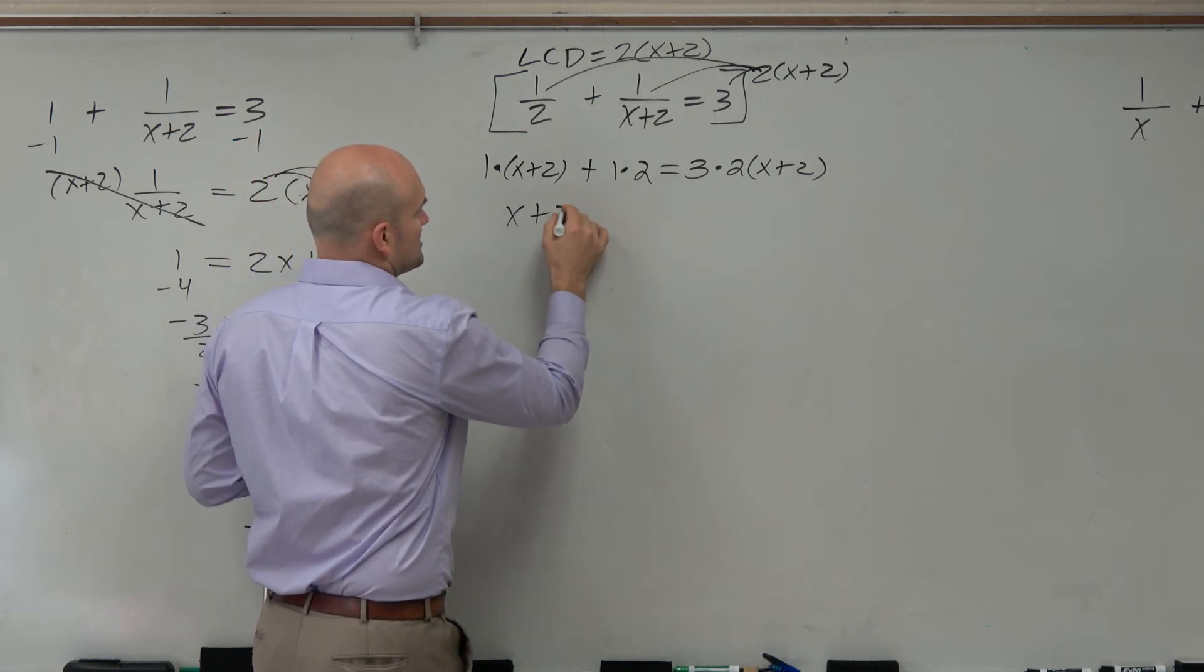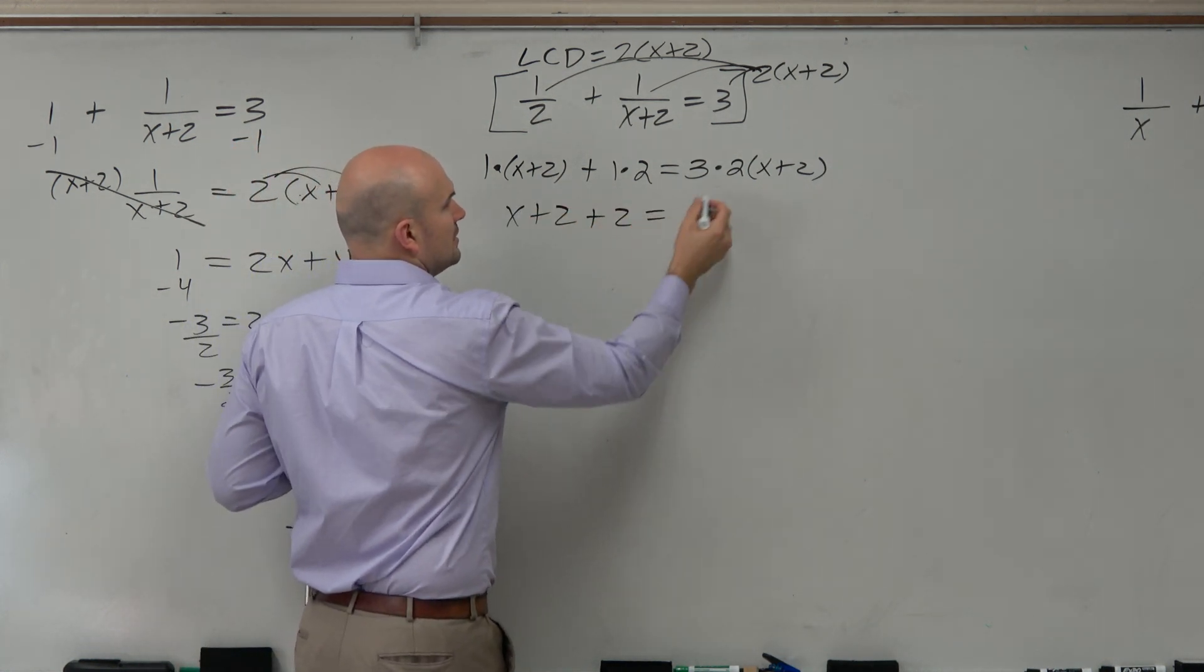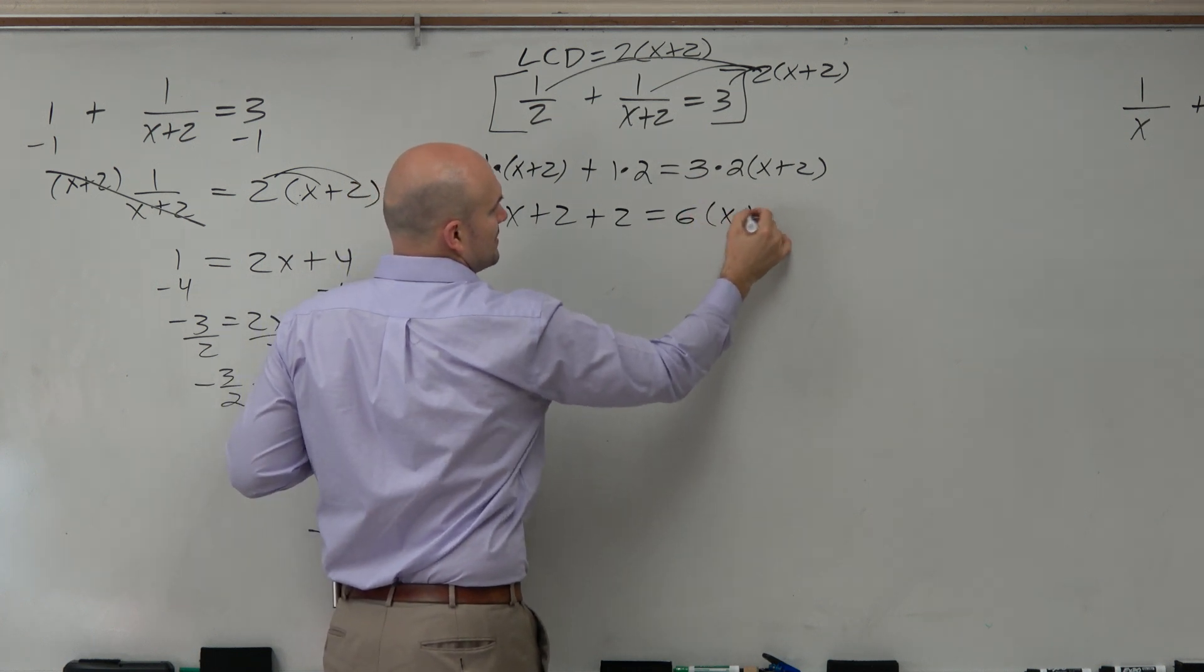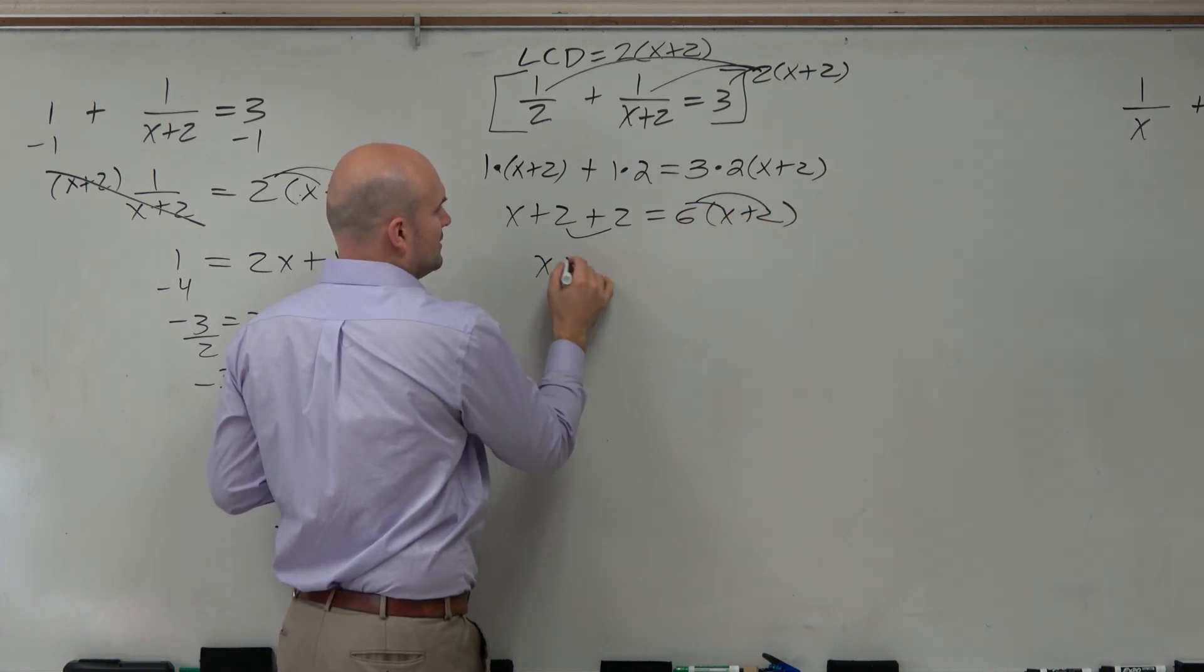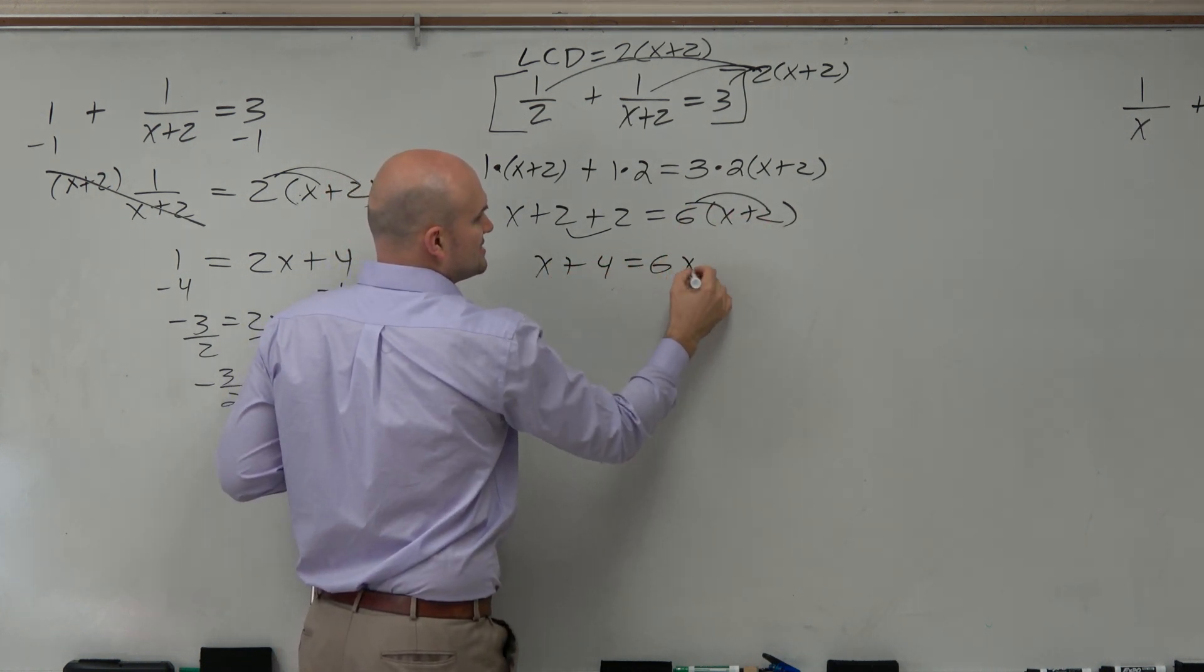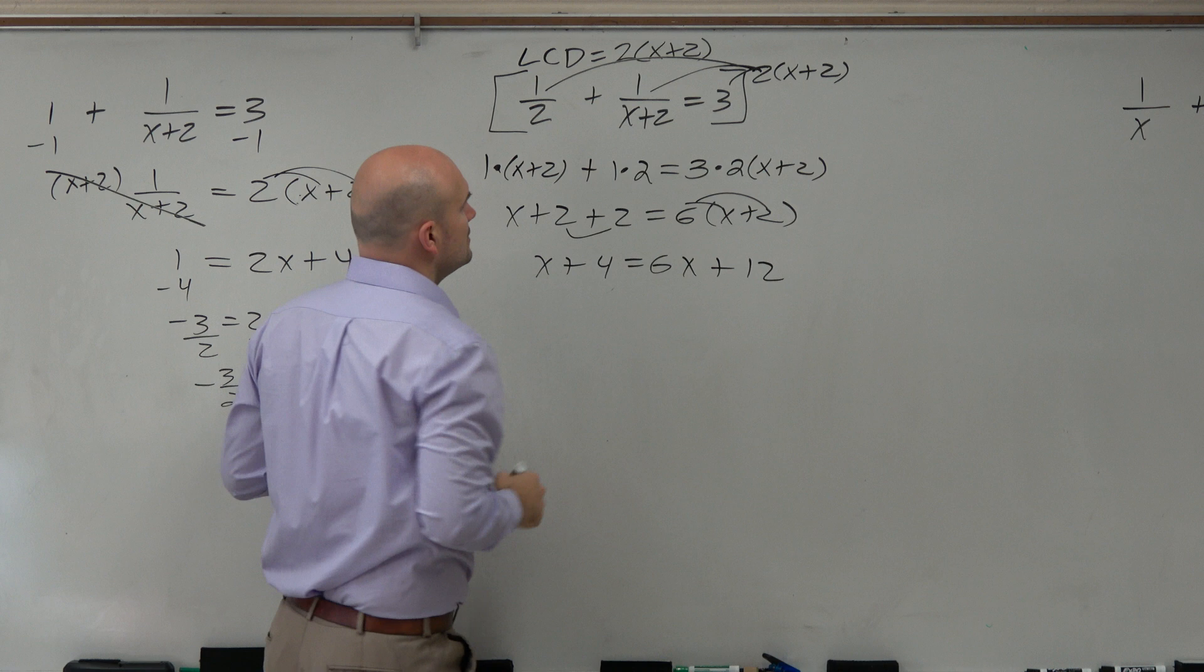Obviously, this can be simplified. x plus 2 plus 2 equals 6 times x plus 2. I'm just breaking down my work a lot more. You can combine like terms and use the distributive property. x plus 4 equals 6x plus 12.